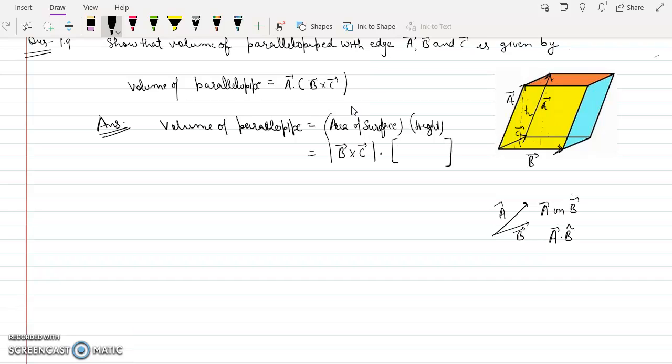So the projection of A in perpendicular direction is A dot with B cross C upon B cross C. This gets cancelled and this is A dot B cross C. Hence we have calculated that the volume of parallelepiped is A dot B cross C.